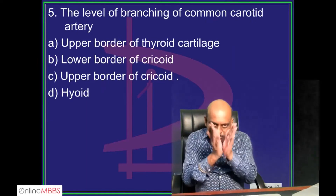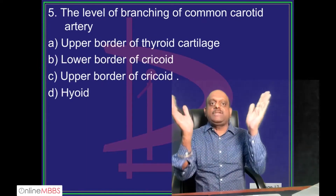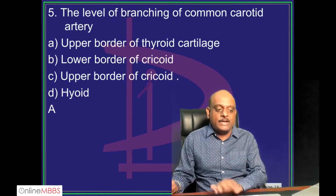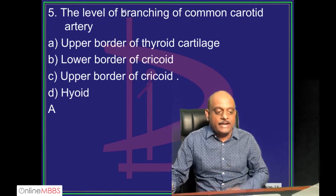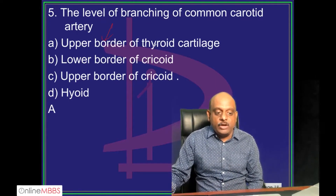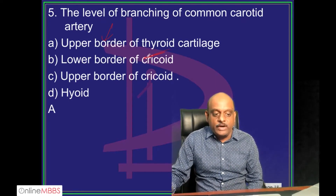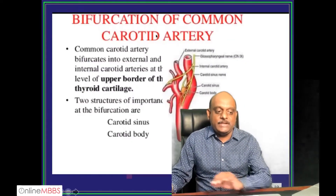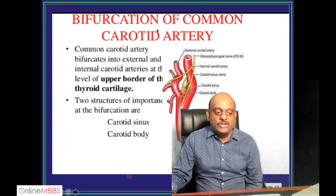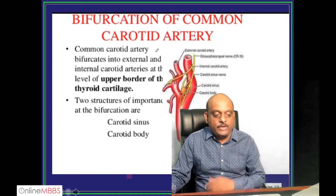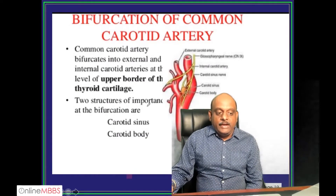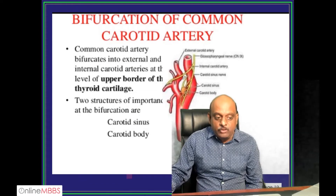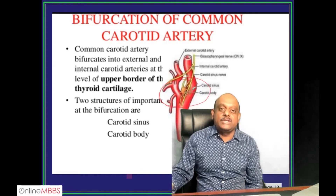What are the levels at which the common carotid branches into external carotid and internal carotid? Anatomical levels - remember this well. The upper border of the thyroid cartilage is the place where the common carotid branches. So, common carotid artery branches at the upper border of the thyroid cartilage.